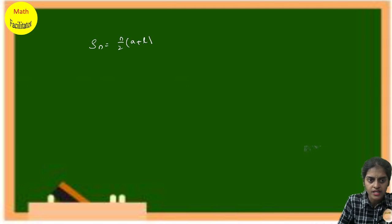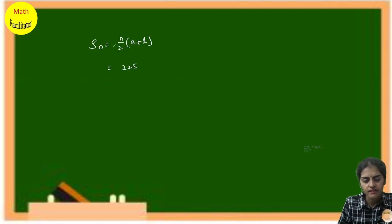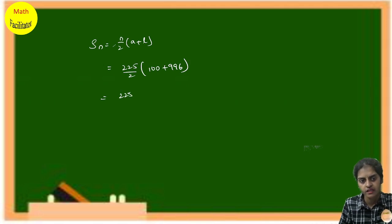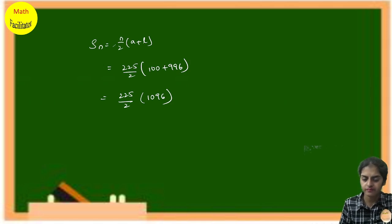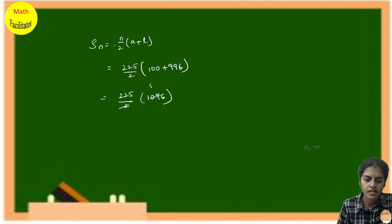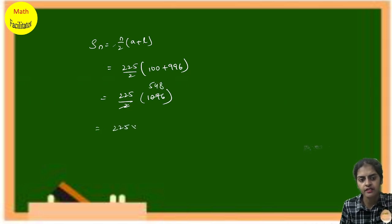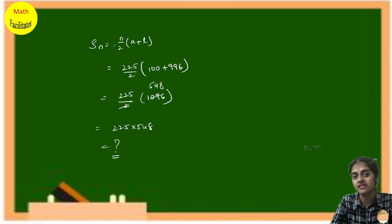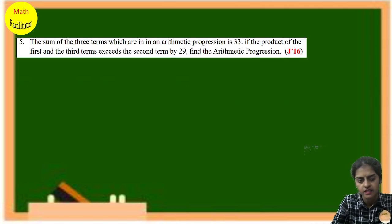With n = 225, a = 100, l = 996: S_225 = (225/2)(100 + 996) = (225/2)(1096) = 225 × 548. Please calculate the final answer — do not leave it incomplete.